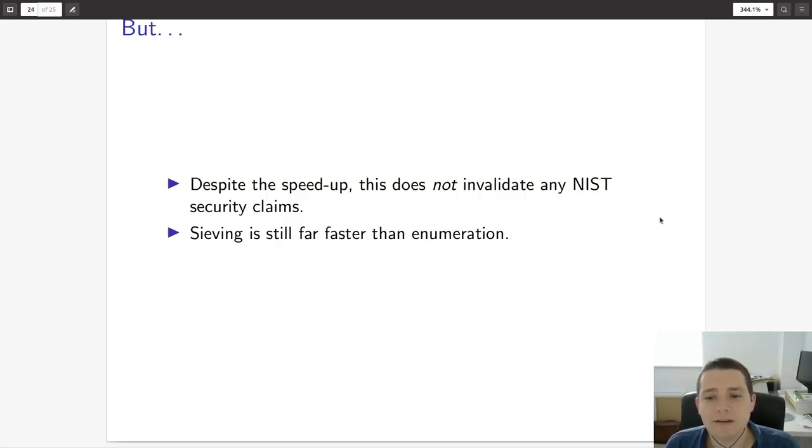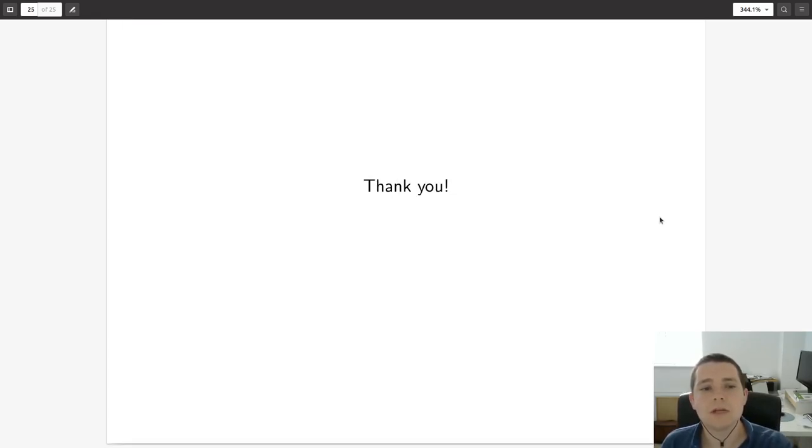But despite all of this, this work does not invalidate any existing NIST security claims. Although we may have moved the crossover for enumeration for 2 to the 256 operations from rank 400 to rank 500-ish, singly exponential sieving is still far faster than enumeration. None of the speed-ups in this work are enough to lower any security claims for any of the NIST-based cryptosystems. With that, I would like to say thank you for your attention, and I look forward to answering any questions you might have on Zulip.